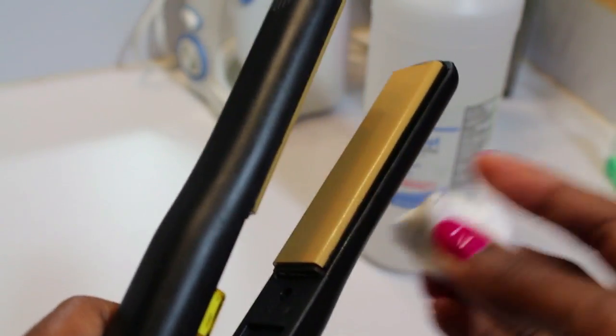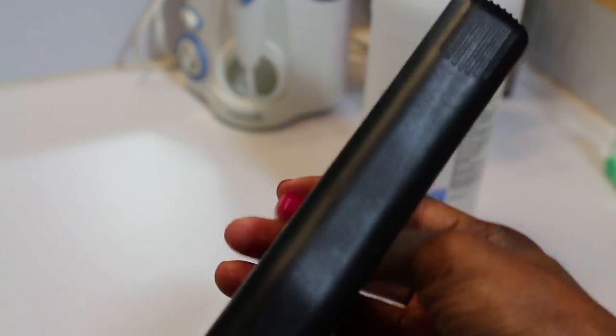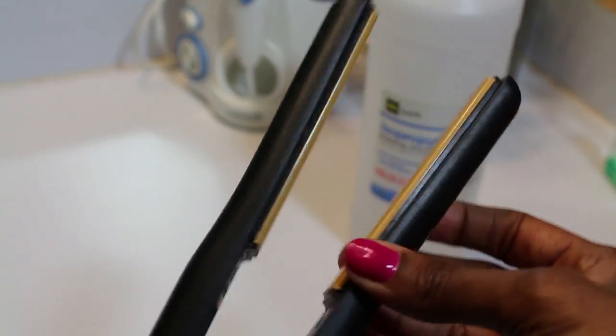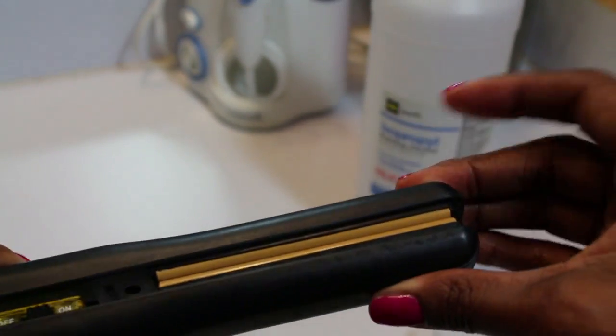It comes right off. You can see it didn't take a long time, didn't take a lot of effort to get off. You should do this maybe once a week like I said, if you flat iron your hair that frequently, or as you start to see the buildup. Look at those plates, you guys! Oh my goodness, I'm so happy that they're clean now.